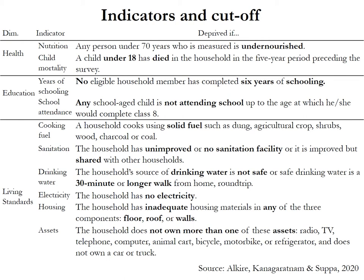If any of these individuals — the child, the young adult, or the adult aged 20–70 — are malnourished, the household is identified as deprived in nutrition. Individuals are deprived in child mortality if a child under 18 has died in the last five years preceding the survey. Individuals are deprived in years of schooling if no eligible member has completed six years of schooling. If there is at least one member with six or more years of schooling, everyone in the household is non-deprived.